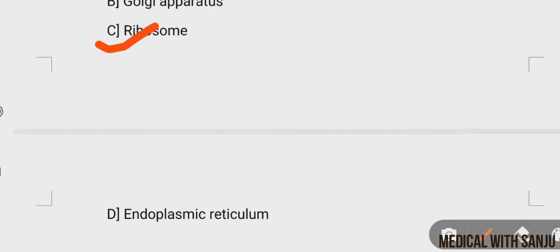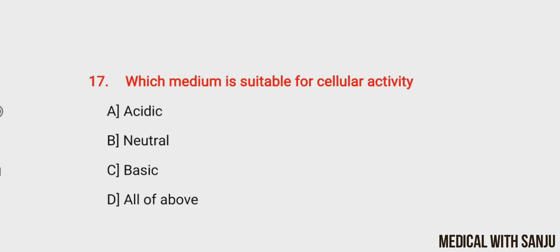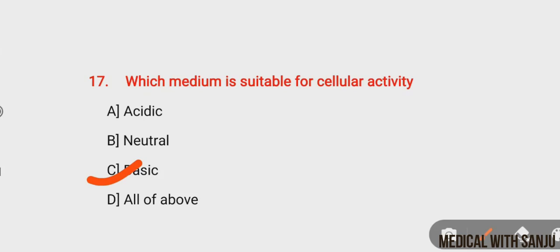Question number seventeen: which medium is suitable for several cellular activities? Option A: acidic, option B: neutral, option C: basic, option D: olive oil. The right answer is option C, basic. The cytoplasm's pH value is 7.2, which is basic. Neutral or even slightly acidic has a pH of 6.95, which would put the cell in a coma.